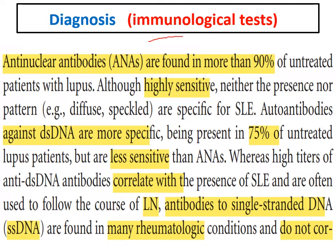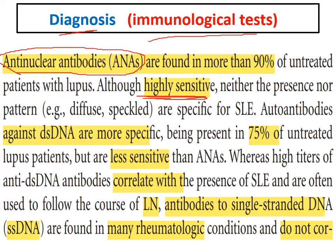Regarding immunological tests: the most commonly prescribed first test is the antinuclear antibody (ANA). ANA is highly sensitive — present in more than 90 percent of cases — but is not specific for lupus; it can be present in other rheumatological conditions. So if ANA is positive, we should proceed to more specific antibodies.